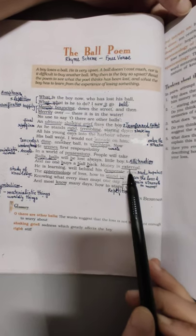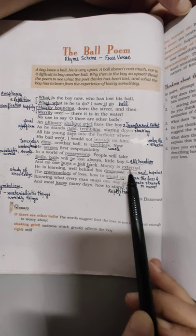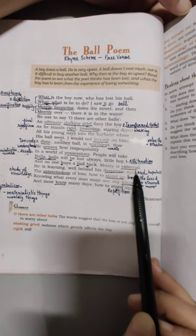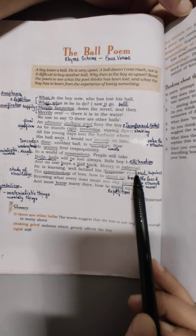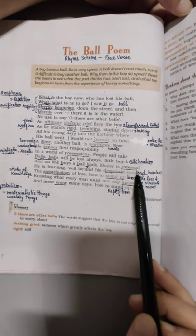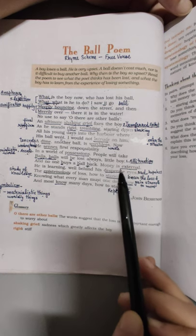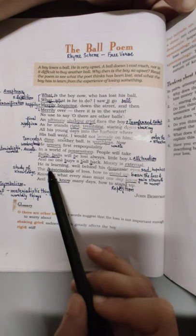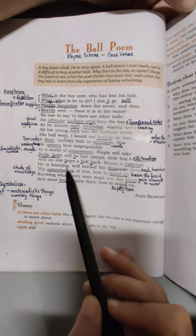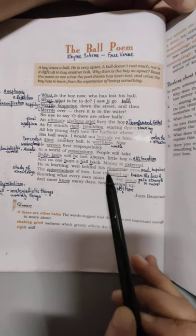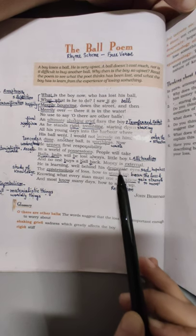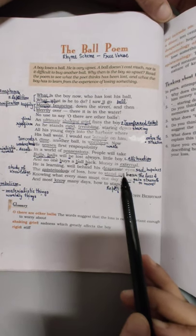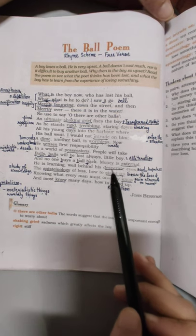Money is external. Poet says yeh jo money hai that is only external. Woh hamein nahi, chizein to hume kharid kar de sakti hai. With the help of money we can buy new things, but we cannot buy the things that we have lost. So money ki power bhi limited hai. He is learning, the boy is learning well behind his desperate eyes. Ki uski jo eyes desperate hai, sad hai, hopeless hai. Lekin woh yeh sab bhi chizon ko seekh raha hai.